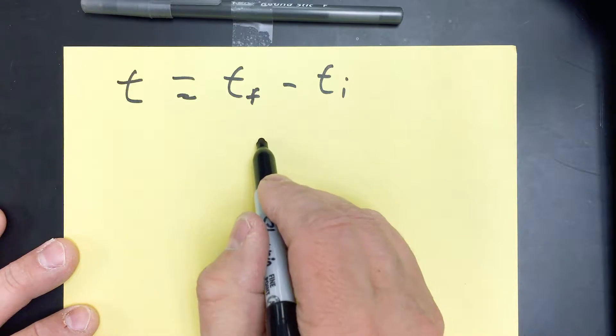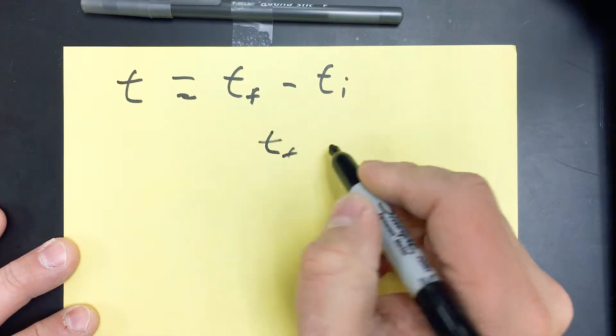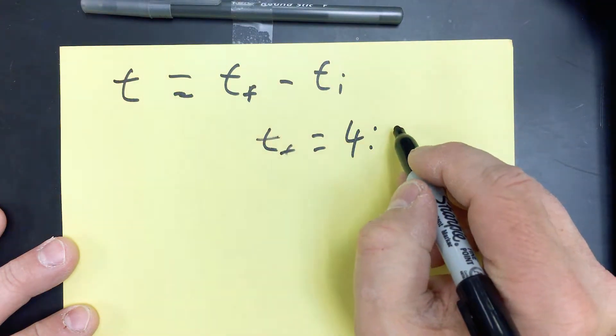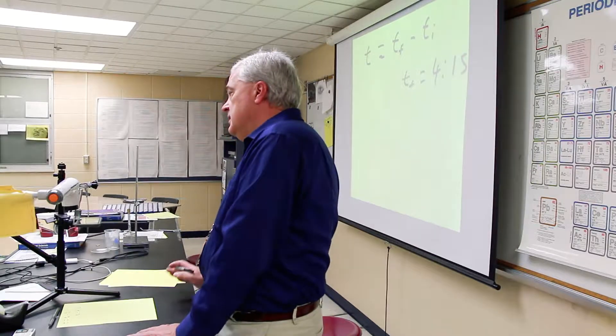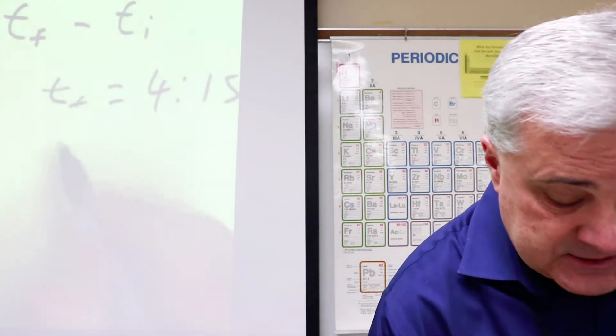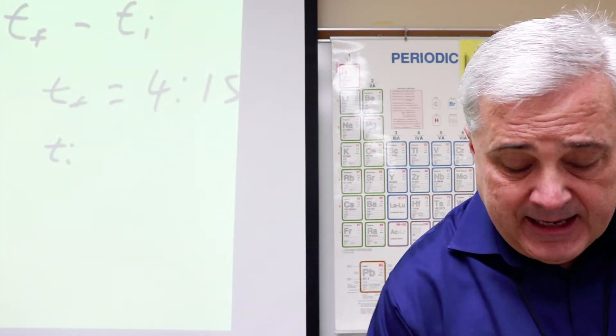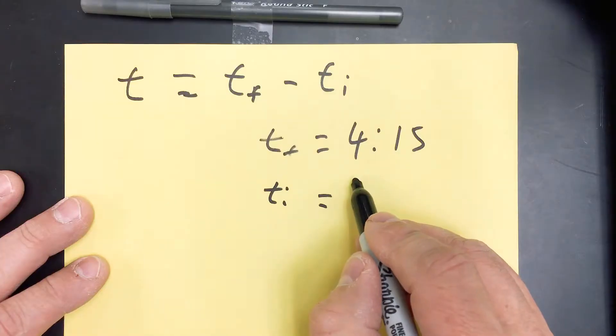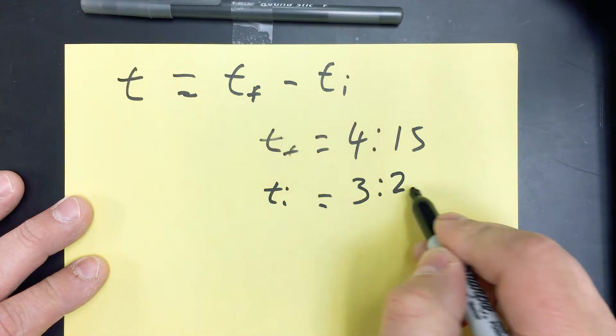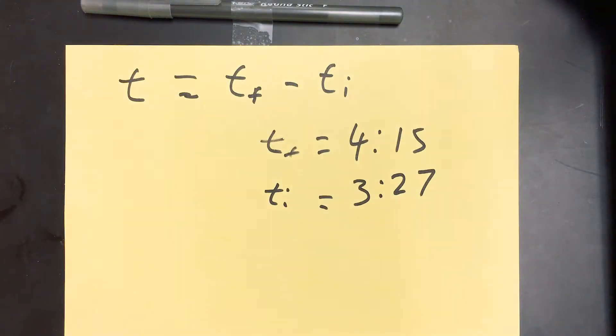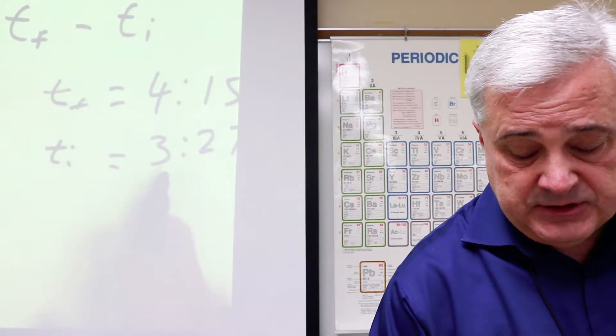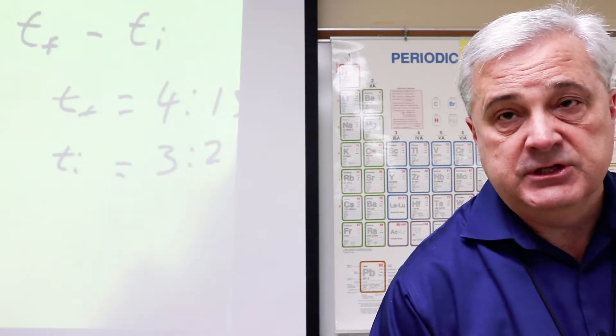We're going to say that the final time is 4 minutes and 15 seconds. So the fourth lap ended at 4 minutes and 15 seconds, and the fourth lap began at 3 minutes and 27 seconds. So our elapsed time is going to be the final time minus the initial time. So 4:15 minus 3:27.